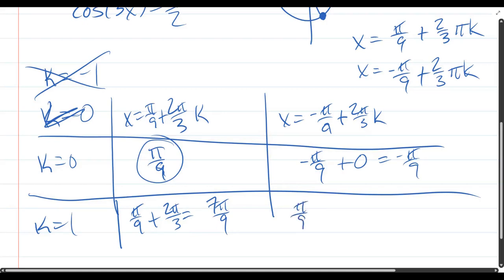The next is negative pi over 9, plus 2 pi over 3, when k is 1. Add that up, this is 6 pi over 9, minus 1 pi over 9 is 5 pi over 9. So there's my 5 pi over 9, my 1 pi over 9 solution, and my 7 pi over 9.